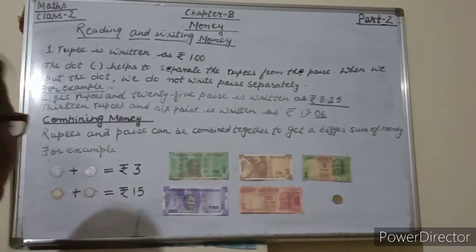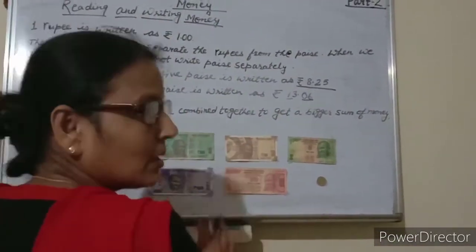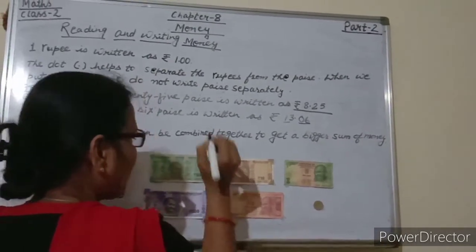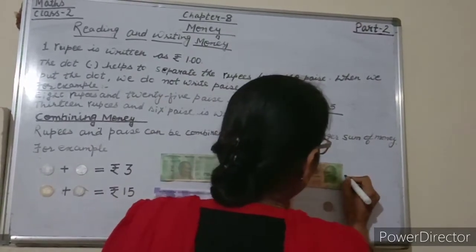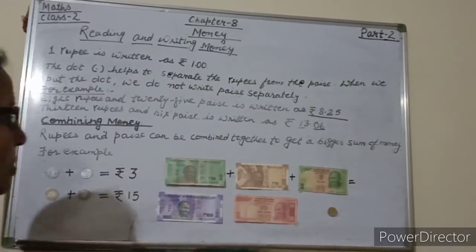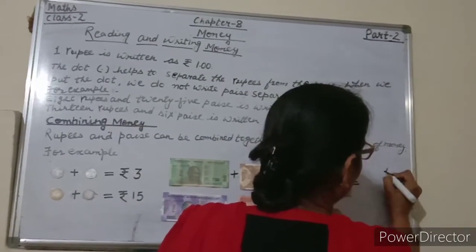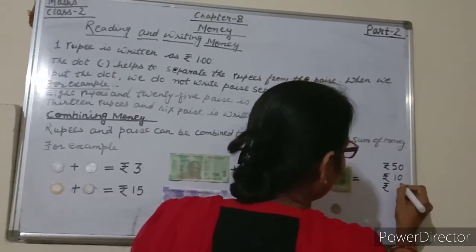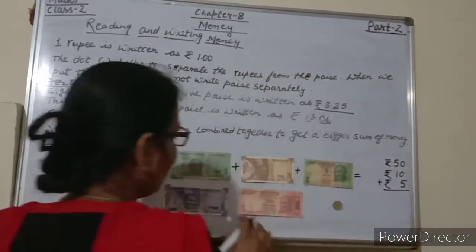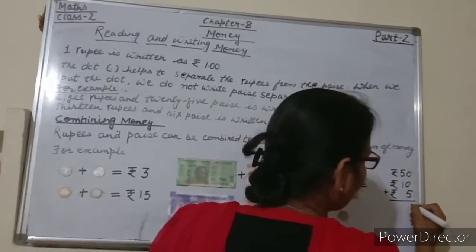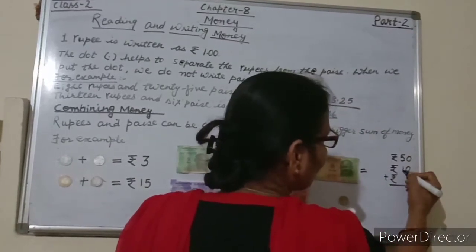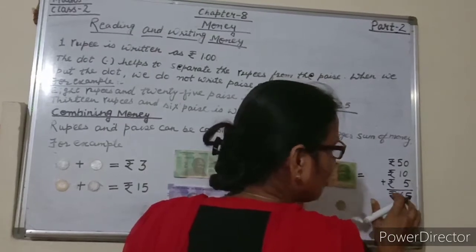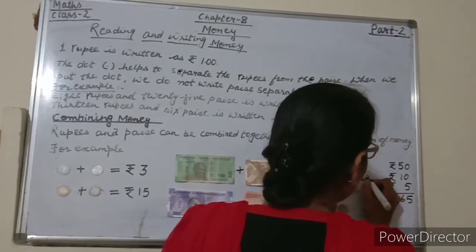Now here we will combine notes. This is a 50 rupees note. So 50 rupees plus 10 rupees plus 5 rupees — just add these notes. 0 plus 0 plus 0 is 0, 5 plus 1 is 6. Don't forget to give the rupee sign. So rupees 65.